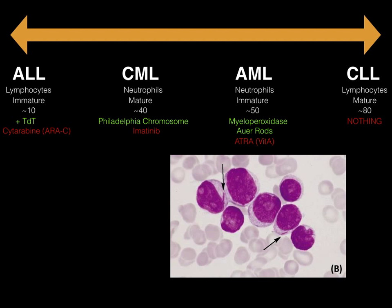Know the spectrum, know the characteristics, and know the age ranges — this is good enough to answer 90% of questions you'll be asked. The last point: CML can progress to AML. CML comes first because it's chronic with mature cells, but patients can go into a blast crisis. A blast crisis is defined as greater than 20% blasts in the smear. So if a question tells you there are 33% blasts, you know it's at least AML — it can't be CML. Patients with CML can progress to AML, so keep that straight.